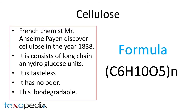First is cellulose. A French chemist, Mr. Anselme Payen, was the first to discover cellulose in the year 1838. In vegetable fiber, cellulose consists of long chains of hydroglucose units. Glucose is a complex carbohydrate consisting of oxygen, carbon and hydrogen. It is tasteless and has no odor. This organic compound is water soluble and biodegradable.